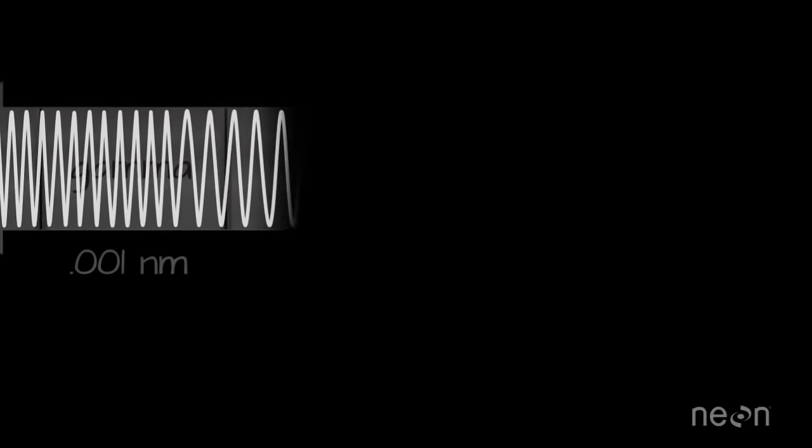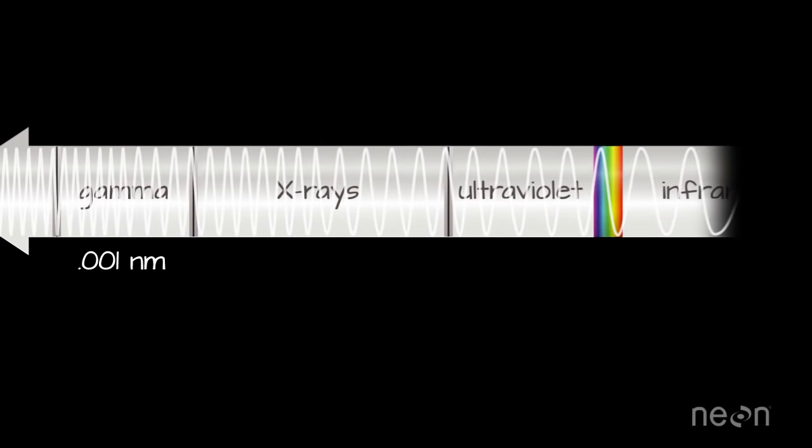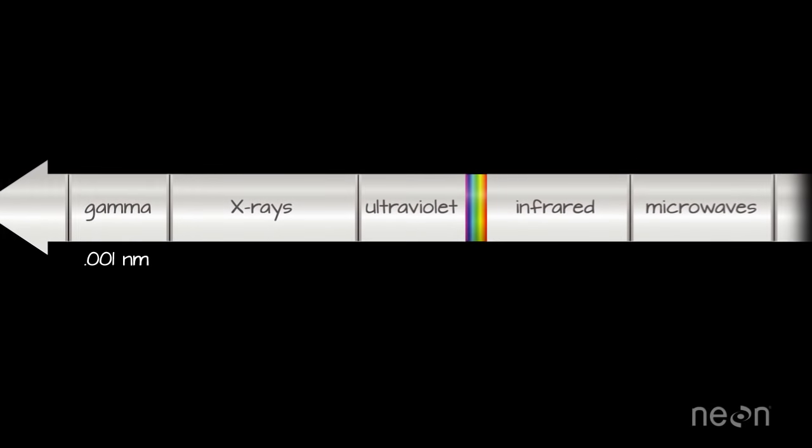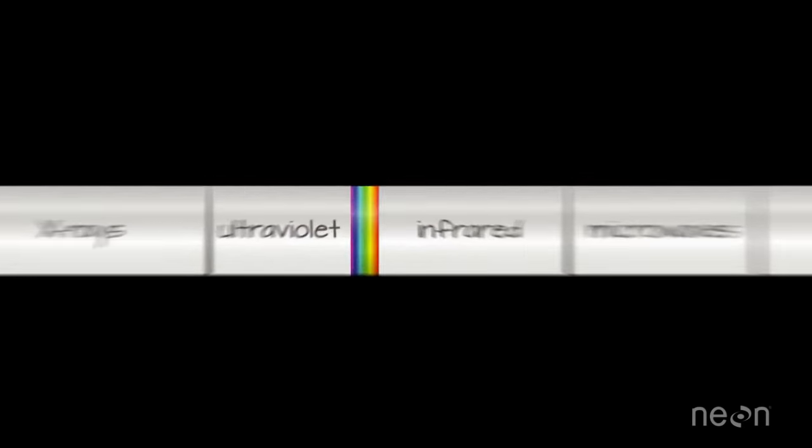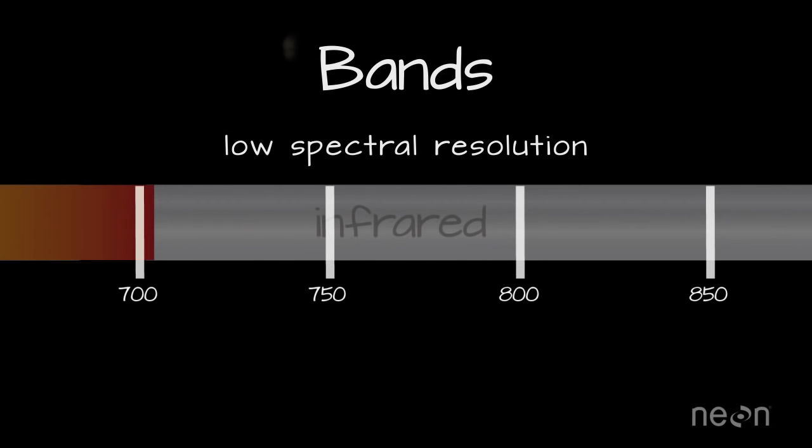Now, there are thousands of wavelengths to record in the electromagnetic spectrum. To deal with all these wavelengths, imaging spectrometers divide the spectrum into groups of wavelengths called bands. For example, a band in the near-infrared region of the spectrum could include energy from 800 to 850 nanometers.